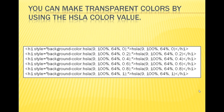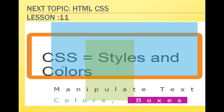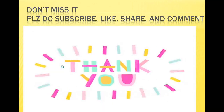Type these values in Notepad and check the output - I will explain clearly tomorrow. For this video, we have completed the theory part covering color values: RGB, hex, HSL (hue, saturation, lightness), RGBA, and HSLA values. Tomorrow we'll cover HTML and CSS lessons. Don't miss it - please subscribe, like, share, and comment. Thank you.